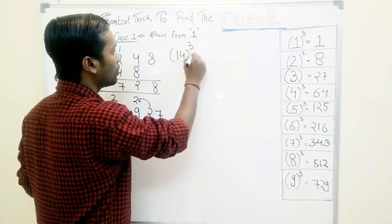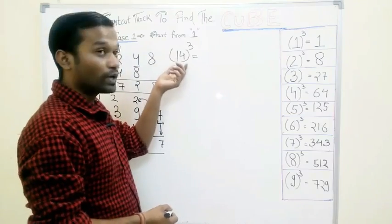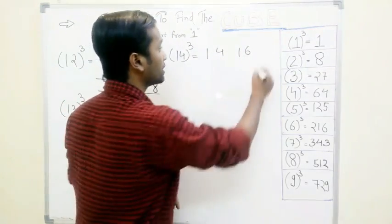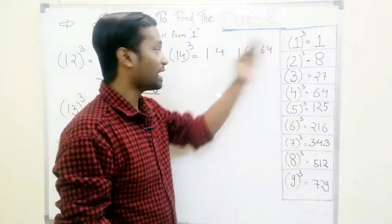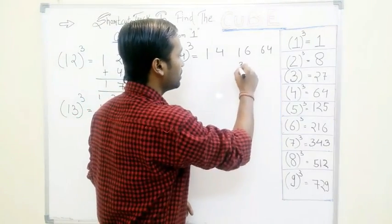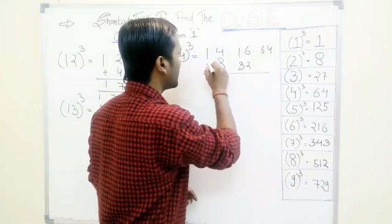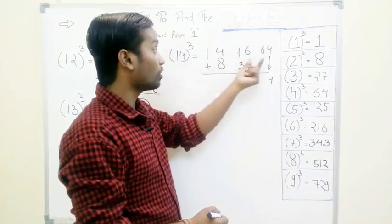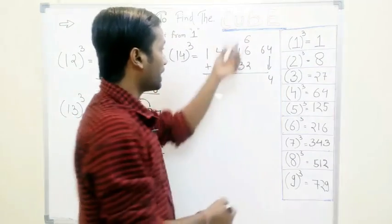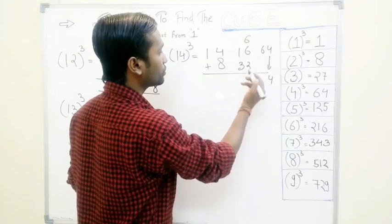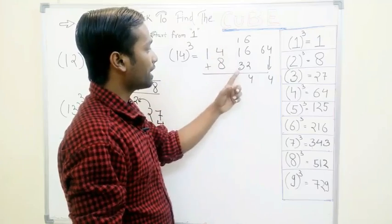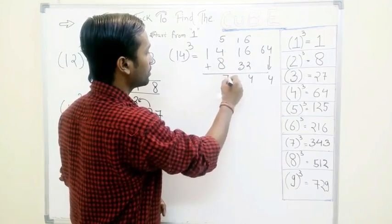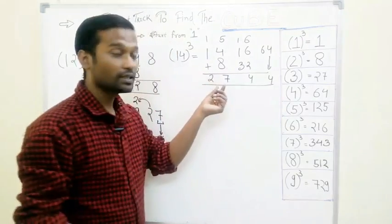Take another example: 14 cubed. Same pattern. Write these two numbers from the left: 1, 4. Square this number — that is 16 — and cube this number — that is 64. Leave the extreme right and extreme left and double these two numbers: 16 doubled is 32, 4 doubled is 8. Write only the unit digit — that is 4 — and 6 as a carry. Don't take 60 as a carry, just 6. Adding: 6 plus 6 is 12, plus 2 is 14, carry 1; 8 plus 4 is 12, plus 5 carry gives 17, carry 1. So our answer is 2744.